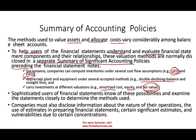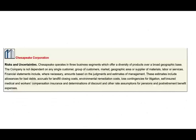The company must also disclose information about their operations and the use of estimates — especially significant estimates. How did they come up with bad debt expense? How did they arrive at their warranty figures? Is it based on past history or averages? They should also disclose any vulnerabilities due to certain concentrations — essentially, telling us about their risks. This is a disclosure about risk and uncertainty.